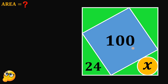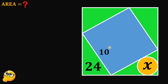And to answer this, we will use the given information. We know that the area of this blue square must be equal to 100 square units. So the length of the side of this square must be equal to the square root of the area, or simply square root of 100, which equals 10. So the length of the side of this blue square must be equal to 10 units.